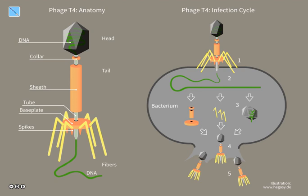Bacteriophages are composed of proteins that encapsulate a DNA or RNA genome, and may have relatively simple or elaborate structures. Their genomes may encode as few as four genes and as many as hundreds of genes.